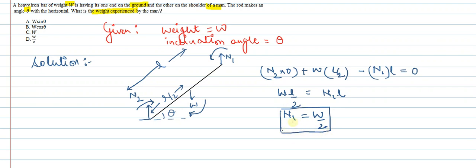We can write weight experienced by man will be equal to W by 2, which is option A, which is option D.